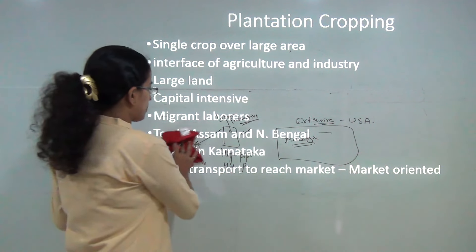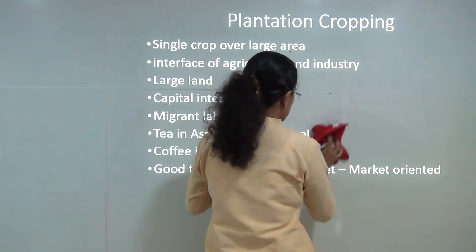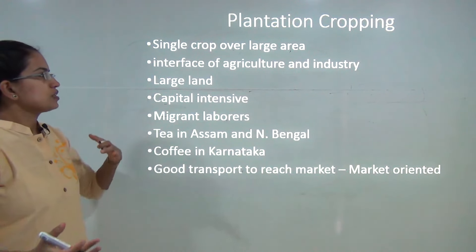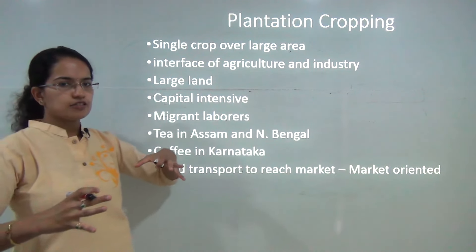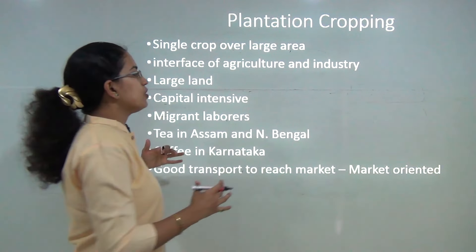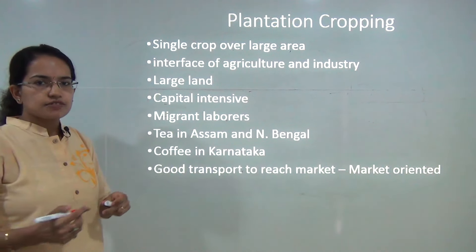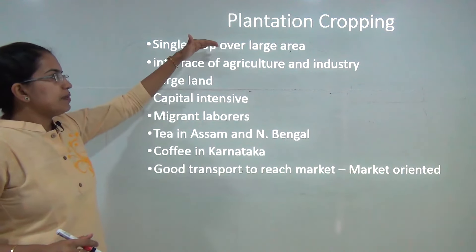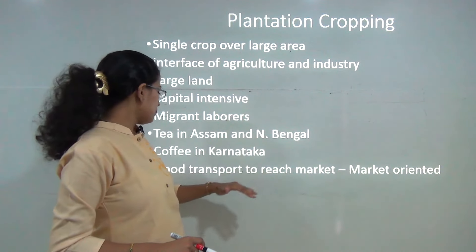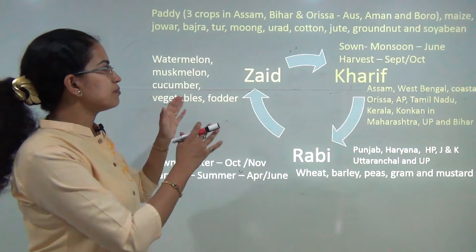Plantation cropping usually involves a single monocultural crop grown on a huge patch of land. It is a kind of interface between agriculture and industry — large land, capital-intensive, with a lot of money invested. It started in the British era, but now most tea plantations are owned by Indians. Most workers on plantation farms are migrant laborers. Tea plantations are found in Assam and North West Bengal, coffee plantations in Karnataka, and good transport to market is essential.